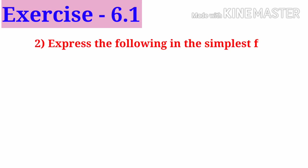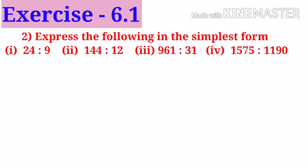Number 2: express the following in the simplest form. Solution number 1: 24 is to 9. 24 and 9 are divisible by 3. So on simplification by 3, we get 8 to 3. The simplest ratio is 8 is to 3.